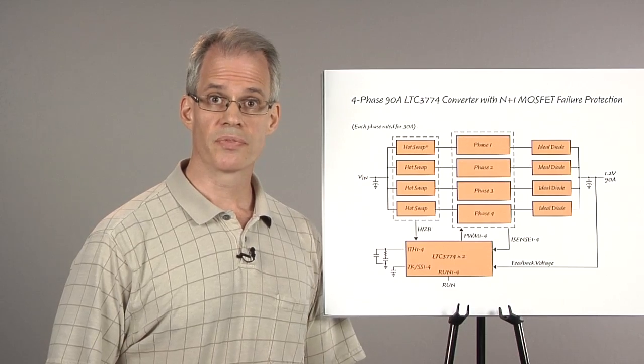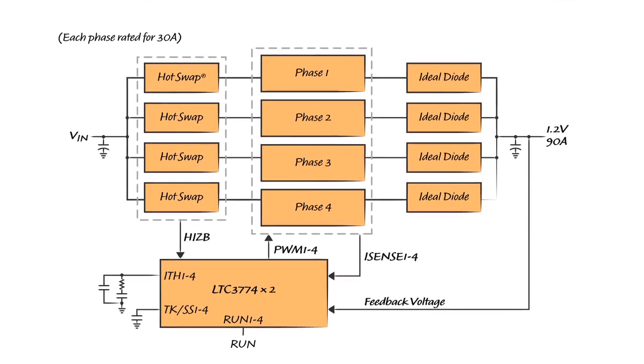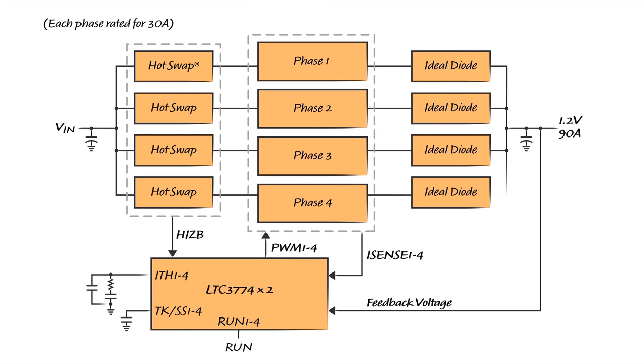To protect against MOSFET failures, a new concept was developed, as shown in this block diagram of an LTC3774 90-amp four-phase converter. Each phase is rated for 30 amps. If just one phase fails, then the other three phases will take over to provide the rated 90-amp load. Fault isolation will be provided by the hot-swap circuit on the front end and the ideal diode on the output.